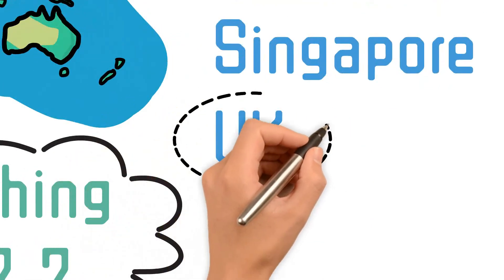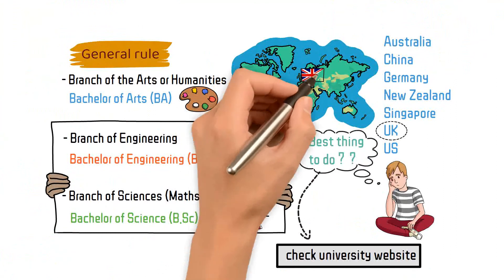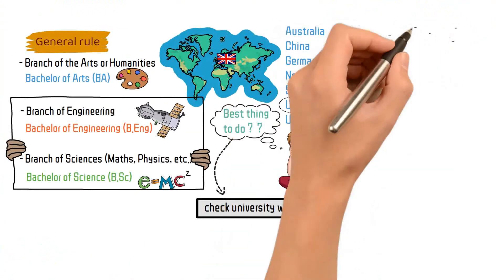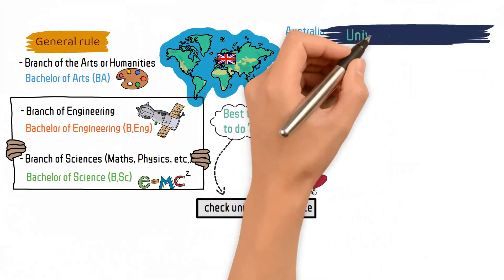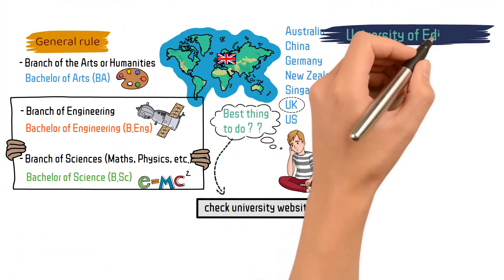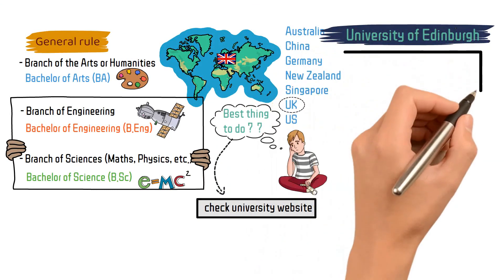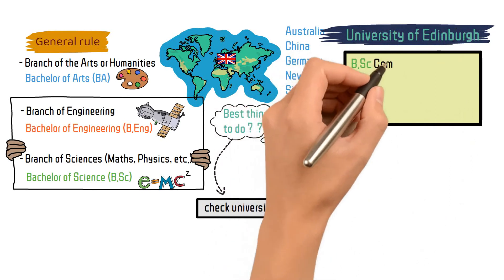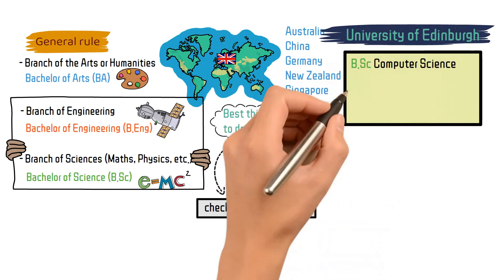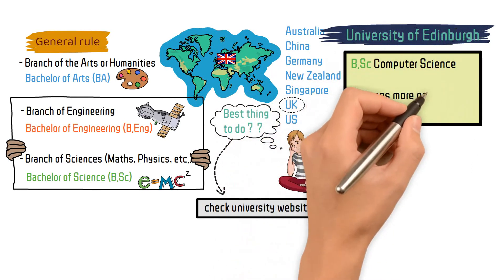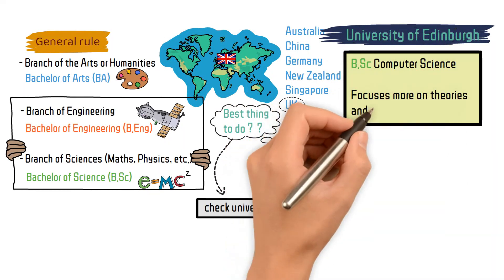To illustrate that, let's take the example of UK, specifically the University of Edinburgh. The Bachelor of Science in Computer Science at that university focuses more on the theories and principles of the field.